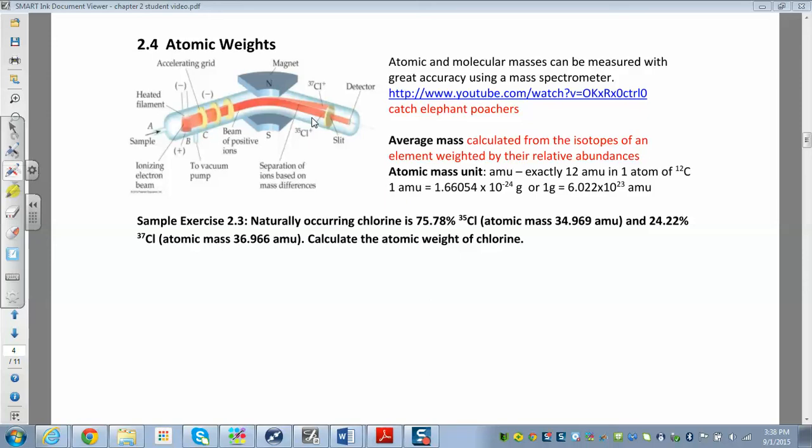Which is kind of neat. All right. That's a real-world example of something here. So what are we going to use it for? We're going to look at the average mass. So you can calculate. The average mass is calculated from the isotopes of elements weighted by their relative abundance.